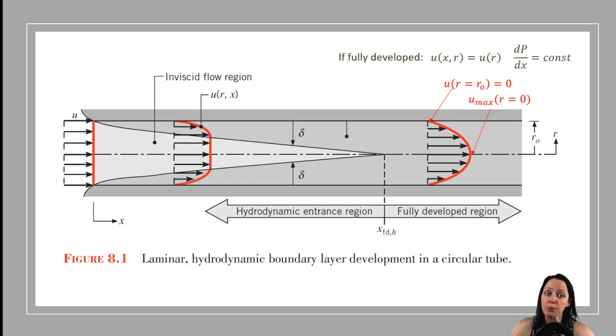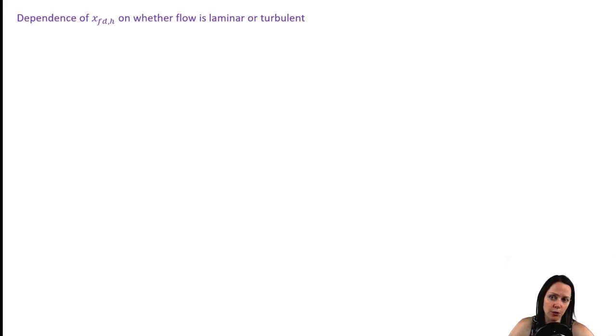Another important thing to remember is that the pressure gradient is constant in the fully developed region. In other words, for a given distance, the pressure will drop a certain amount, and that relationship is constant for the entire length of pipe past the entering region. The length that it takes for flow to get fully developed after it enters the pipe depends on whether or not the flow is laminar or turbulent.